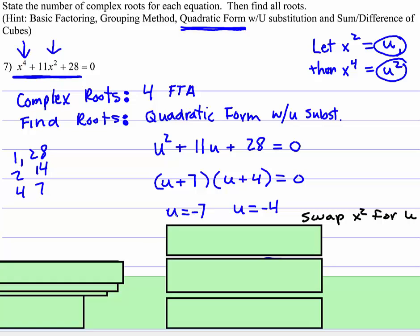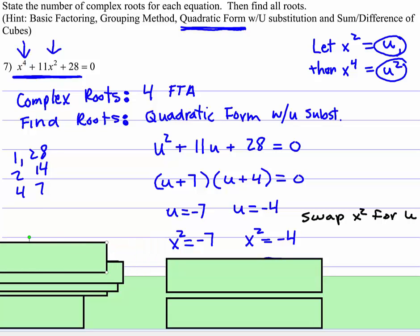So right here, we're going to now substitute back in. Everywhere there's a u, we're going to put x squared. And then we're going to solve. So we're just going to take the square root on both of those.